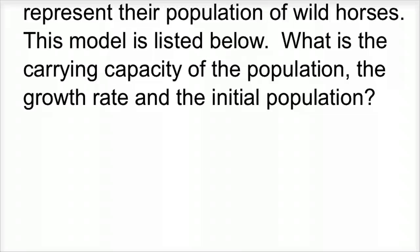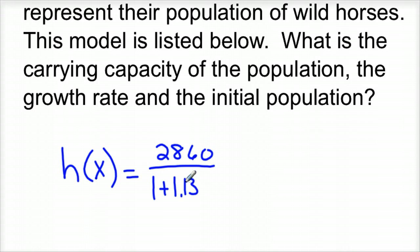This just kind of gives you an idea of what the numbers mean and where they're at. I did get these actual numbers from the Oregon, we have a couple of horses from that particular wild reserve. And so, interesting to see their numbers. This is kind of how I would model that based on the numbers that they keep. So the population of horses is 2,860 divided by 1 plus 1.13 e to the negative 0.12 t. It wouldn't be H(x), it would be H(t), time t.